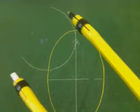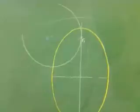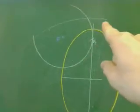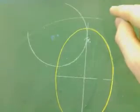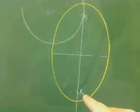And then cut that arc with another arc, which is radius V1, V2, centre F2.